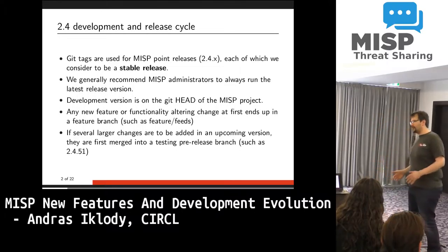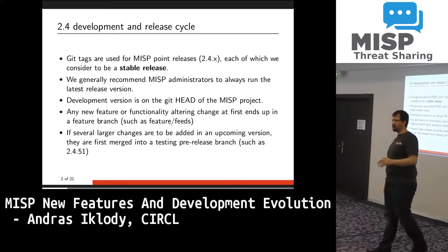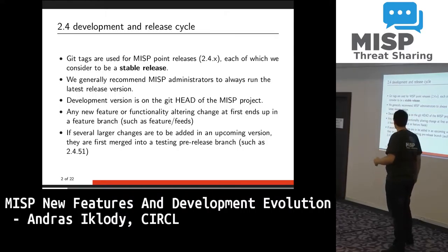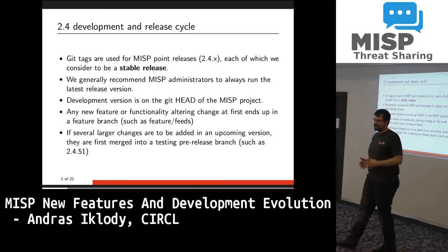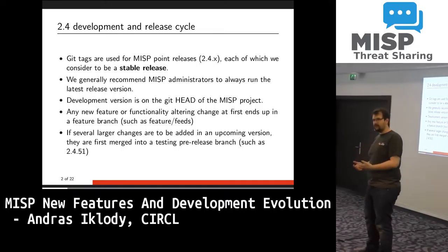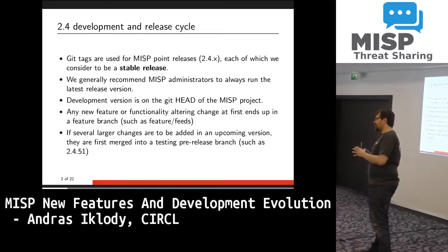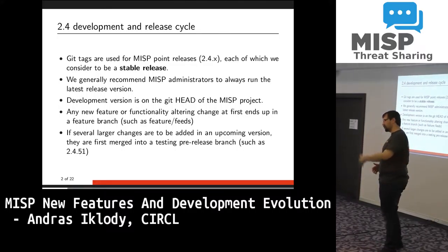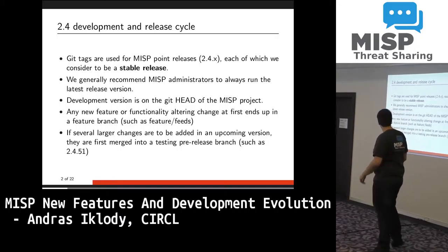That's our official recommendation. Unofficially, we consider the head of 2.4 to be stable, so if you want the latest fixes and patches, it should be fine to use that. Whenever we add a new feature, we go through testing before it reaches the 2.4 branch. Very small fixes go directly to 2.4; bigger features go on a feature branch, which is then consolidated into a point release branch, tested, and merged into 2.4.